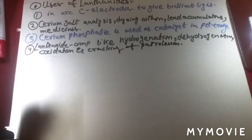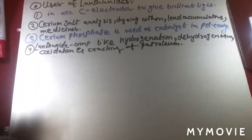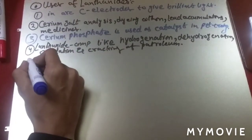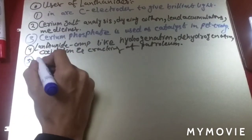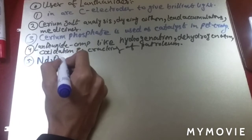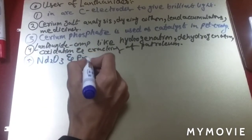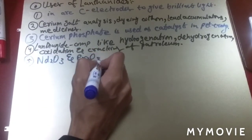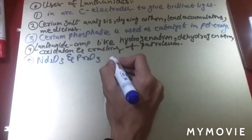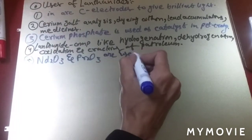Nd₂O₃ and Pr₂O₃ are used as colouring agents for glass and in the production of standard filters.